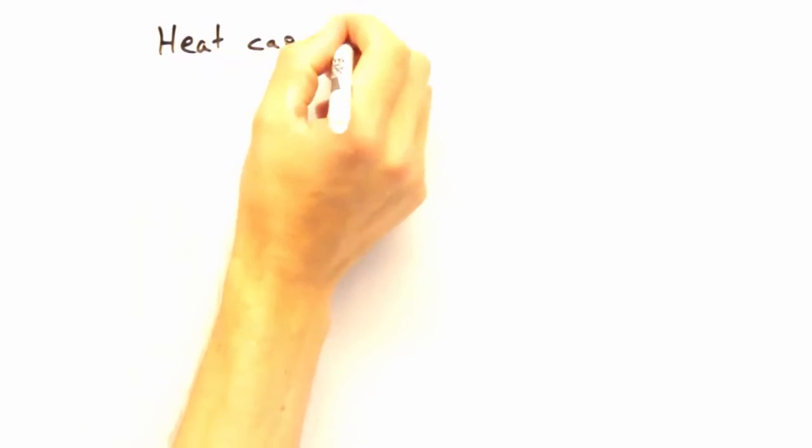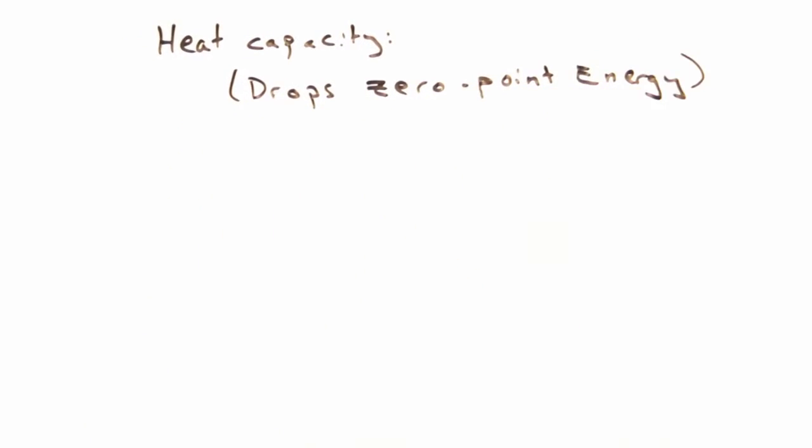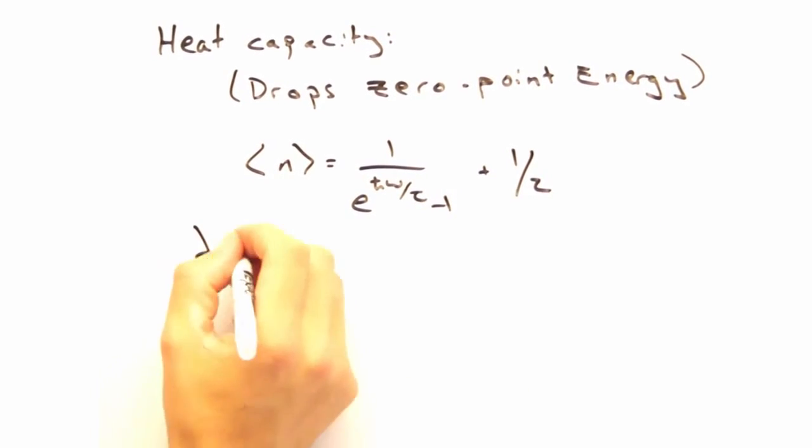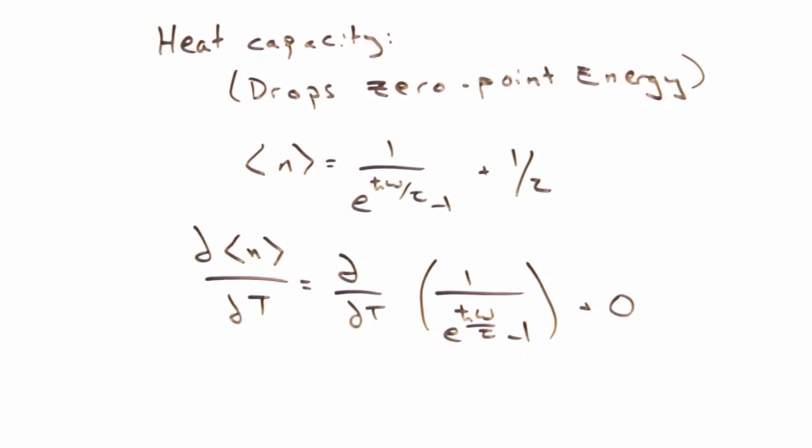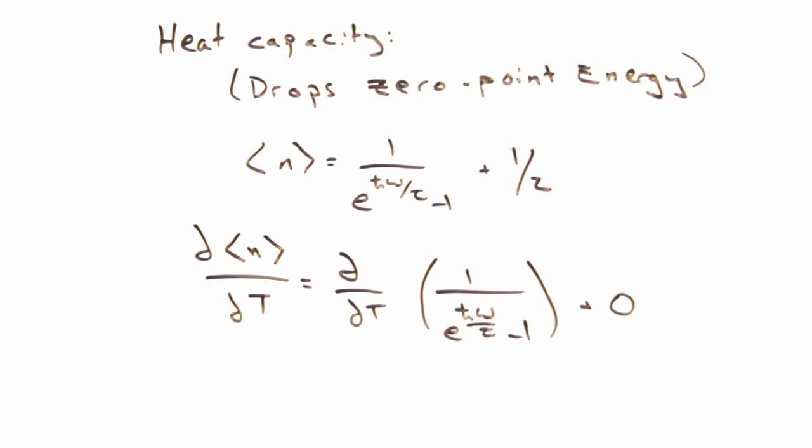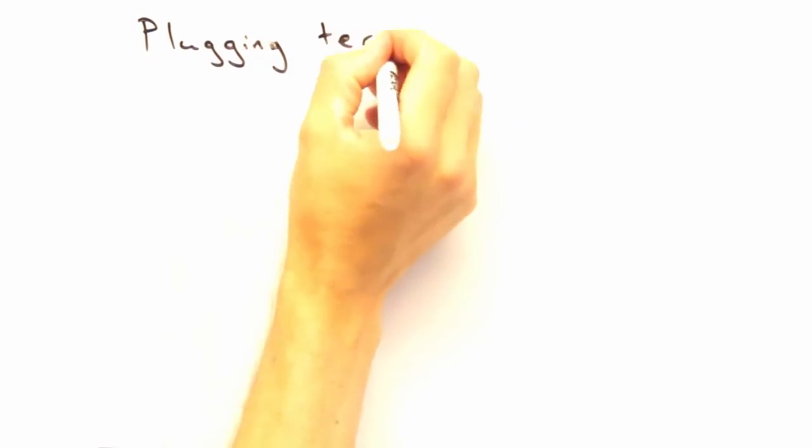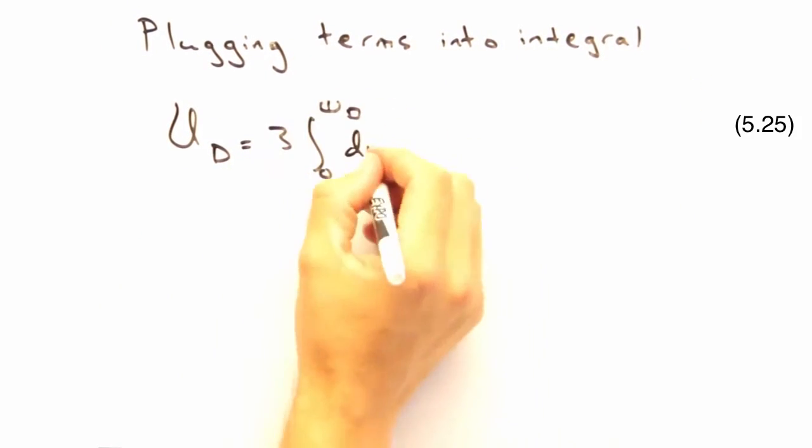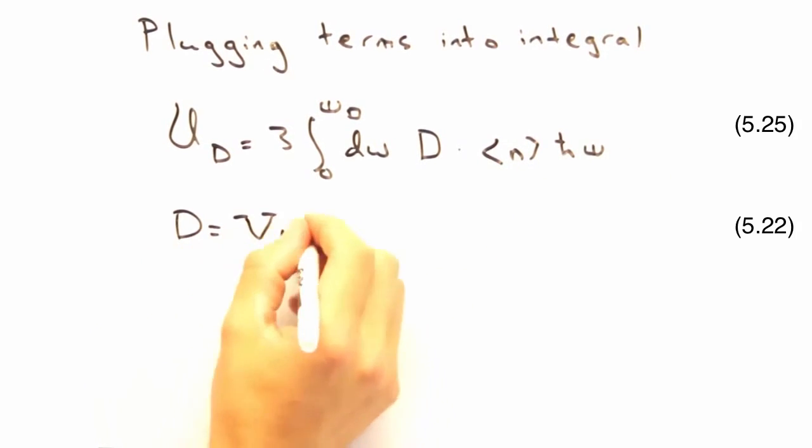Sounding good so far. Looks like you dropped the zero point energy because you know it's going to go away in the temperature derivative. Since the only term that depends on temperature is the Planck distribution, we can pull everything else out of the integral. Since we know what the density of states is in 3D, we're just about ready to crank out this integral.